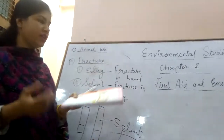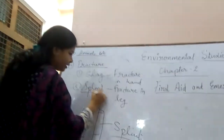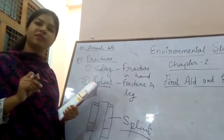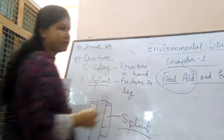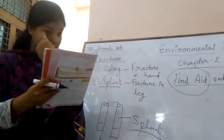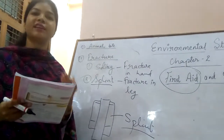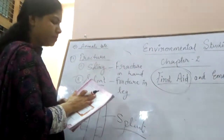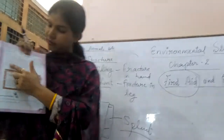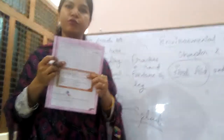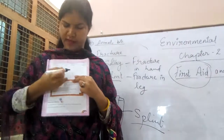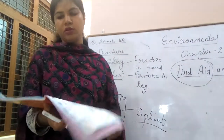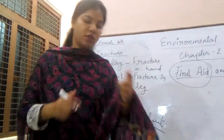When a leg gets a fracture, we use a splint. The immediate medical help given to an injured person is called first aid. Accidents usually happen due to carelessness. In the OMR sheet, you have to encircle the right option. So here we have done our two chapters; we will discuss the next chapter. Thank you.